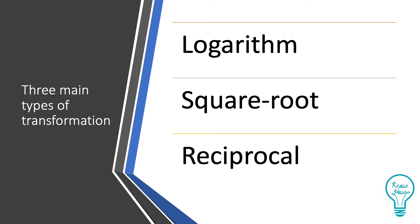There are three main types of transformations that are used to normalize data: the logarithm, the square root, and the reciprocal.